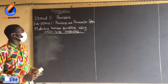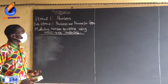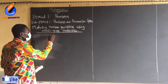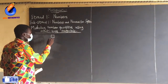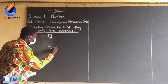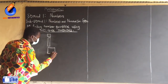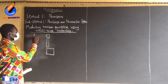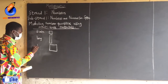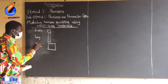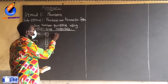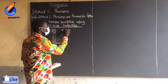Now on our numeration system, we want to talk about modeling number quantities using the multibase material. These are the multibase materials we are going to use to model any number quantity. The name given to this one is block, we call it block. And we call this one long, and we give this one the name flat. Now this multibase material is saying that one block is 10,000.